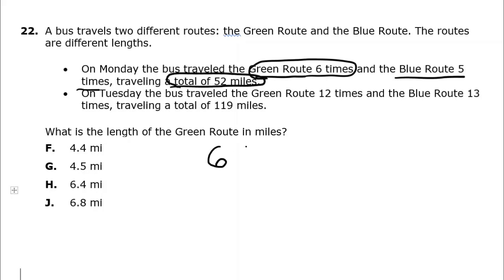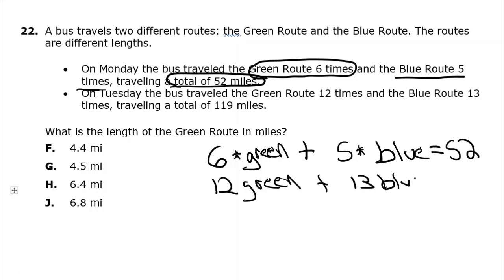So six times the green, I'll use a little times symbol, plus five times the blue, that means multiplication, I don't want to use an X because it sometimes looks like an X, equals a total of 52 miles. On Tuesday 12 times the green, 12 green plus 13 blue equals a total of 119 miles.